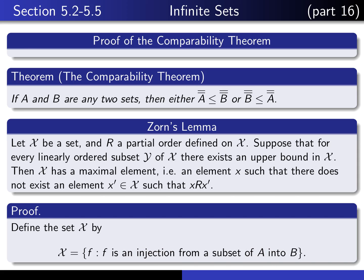In order to do that, we need to define a partial order on this set. If we give ourselves two elements F and G in X, then we say F is related to G if G is an extension of F — the domain of G contains the domain of F, and when we restrict G down to the domain of F, the resulting function agrees with F. We then show this is a partial order and that Zorn's Lemma hypotheses hold, yielding a maximal element whose domain is all of A or range is all of B.